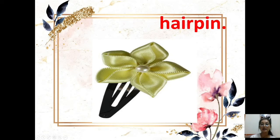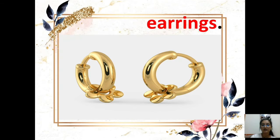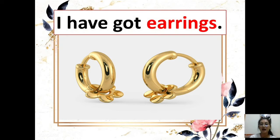Next we have hairpin. Hairpin — for girls also. What have you got? Answer: I have got a hairpin. And how about these? These are earrings, for your ears. Earrings. There are two, so we put S — earrings. If it's only one, no S. But because there are two earrings, we need to put S. What have you got? I have got earrings.